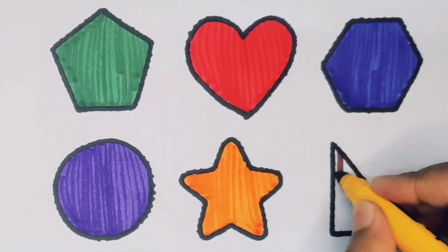Next, purple color circle. Orange color star. Next, chocolate color right triangle.